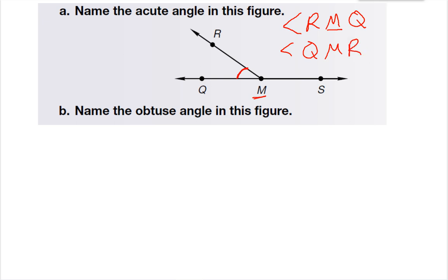On B, it wants us to name the obtuse angle. So the obtuse angle is this big angle here. And the three letters are R, M, and S. So I could name this RMS, or I could name it SMR.